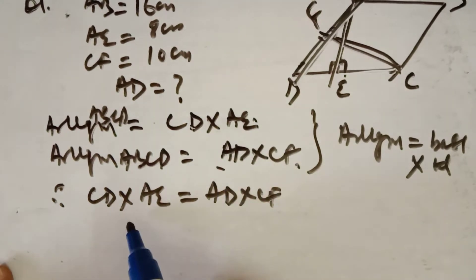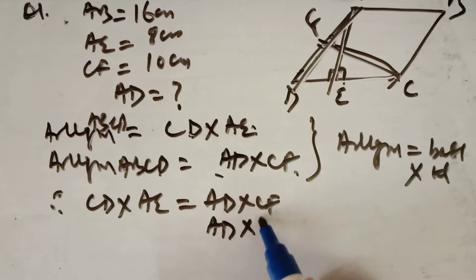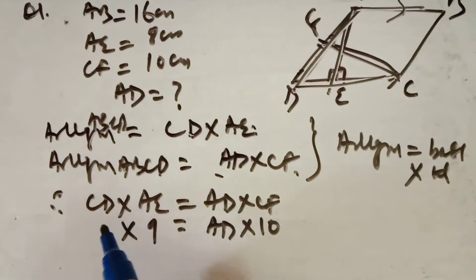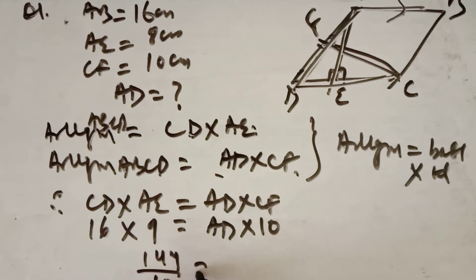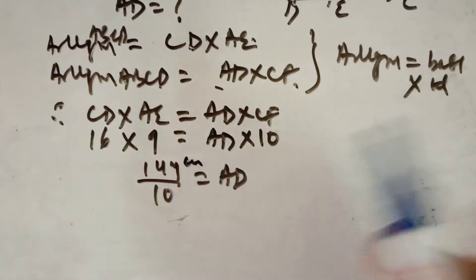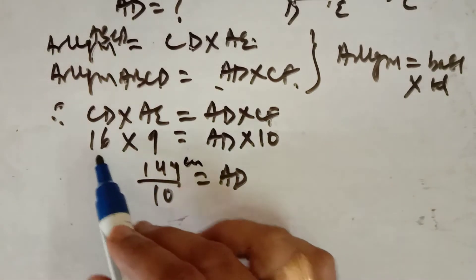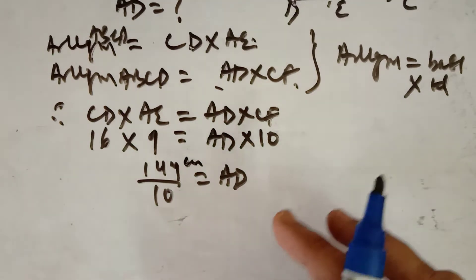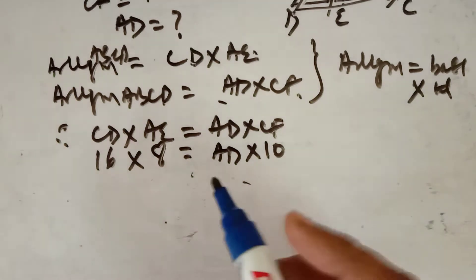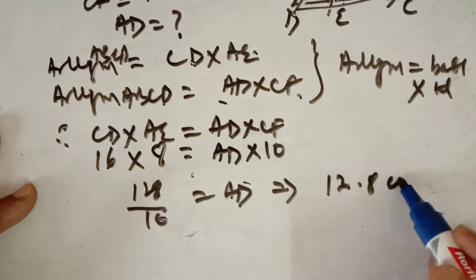You have to find AD. CF is given equal to 10, AE is given equal to 8, and CD will be equal to AB, which is the opposite side of the parallelogram, equal to 16. So 16 × 8 = 128, divided by 10 is equal to AD. The length of AD comes out to be 12.8 cm.